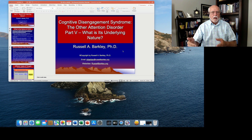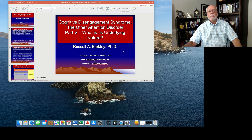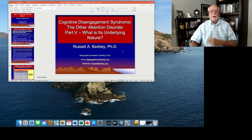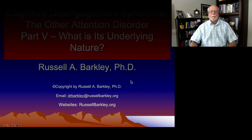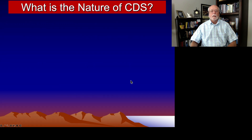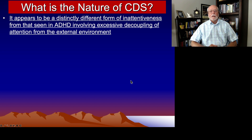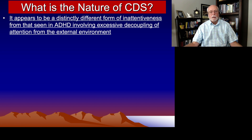What is its underlying nature? We know what it looks like behaviorally — we have that nice list of symptoms I reviewed in the first lecture. But what does all that mean? One possibility, as we'll see here in this PowerPoint presentation, is that CDS could just be a different problem with attention. We know that there are at least five or six kinds of attention in the human brain,